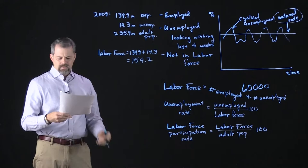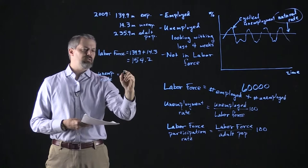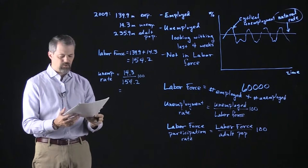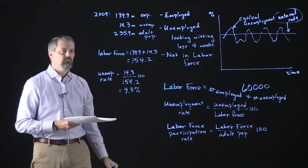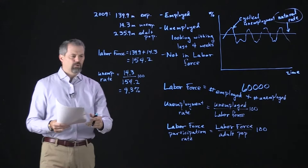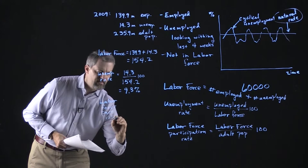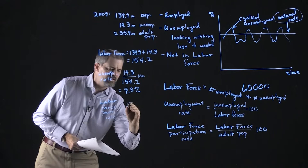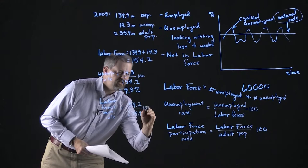We can calculate the unemployment rate: 14.3 divided by 154.2, multiplied by 100, gives us an unemployment rate of 9.3% in 2009. For the labor force participation rate, we take 154.2 divided by 235.9, multiplied by 100, giving us a labor force participation rate of 65.4%.